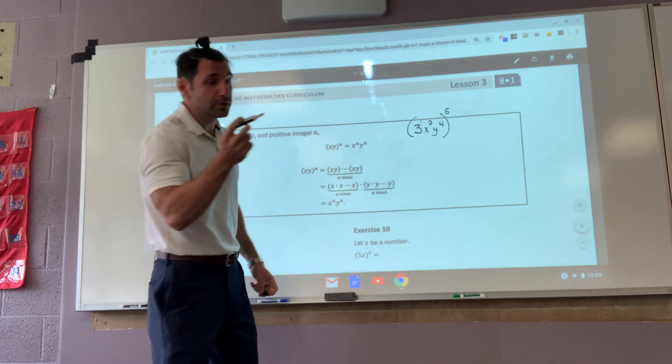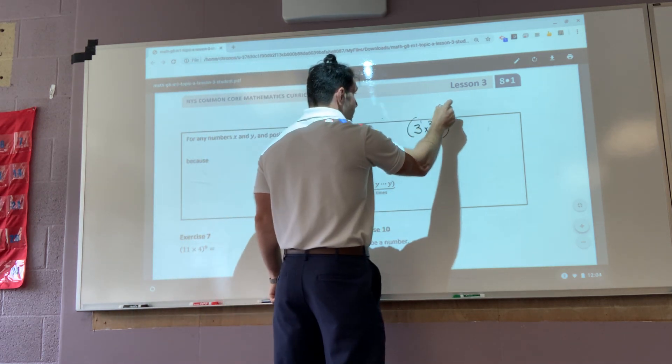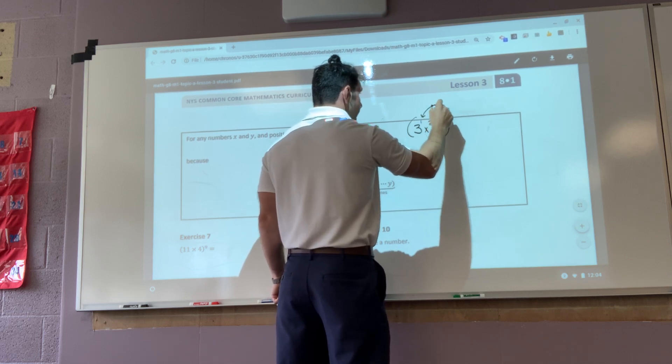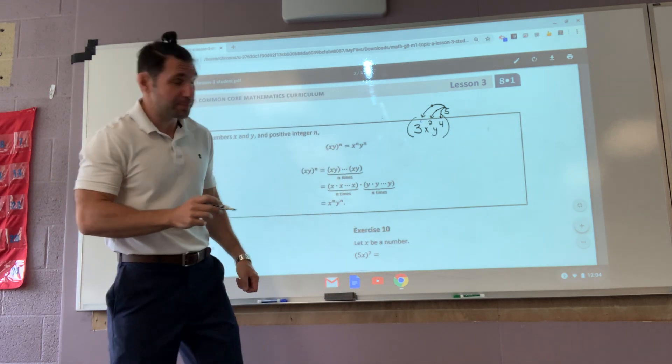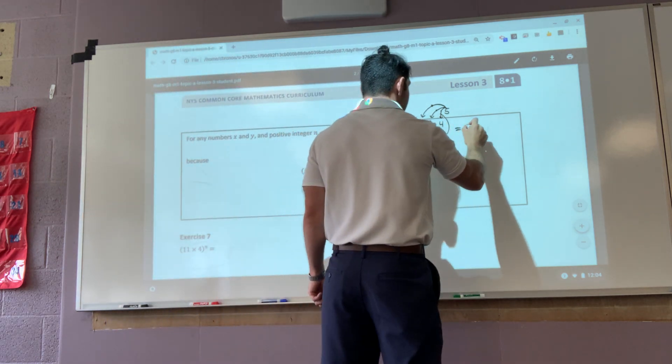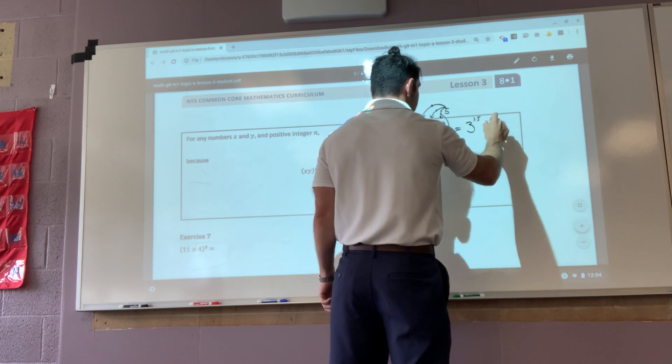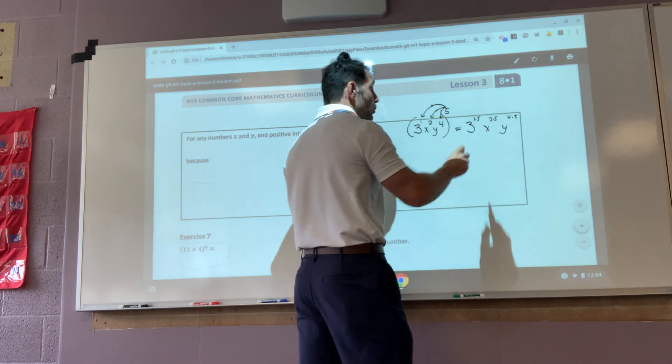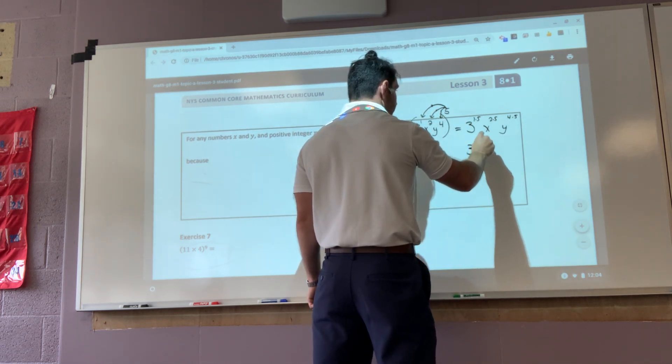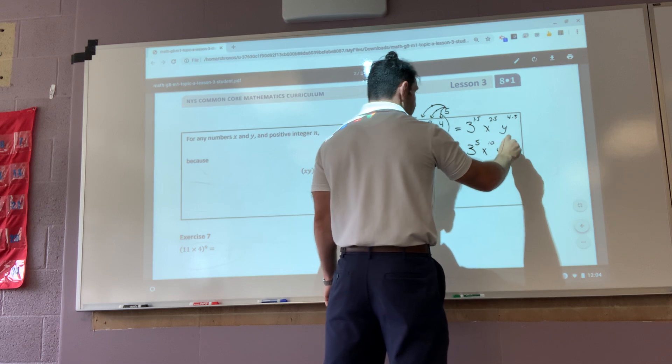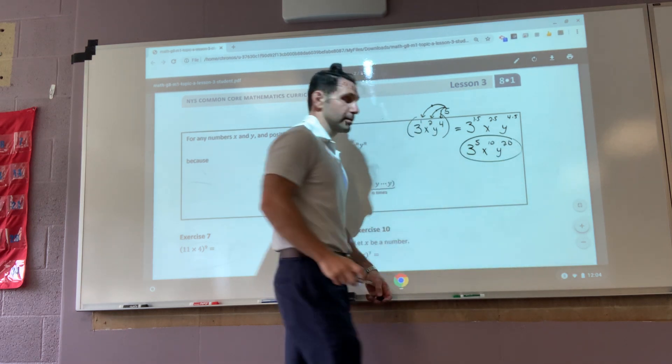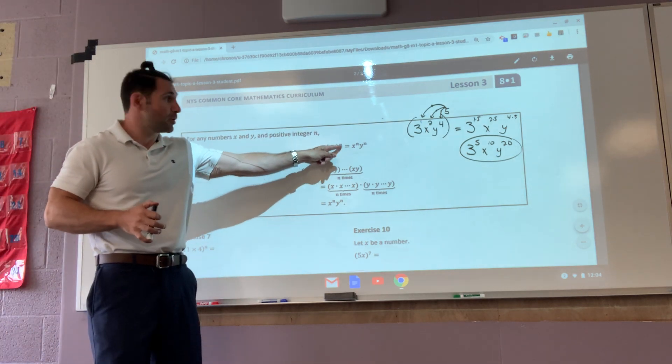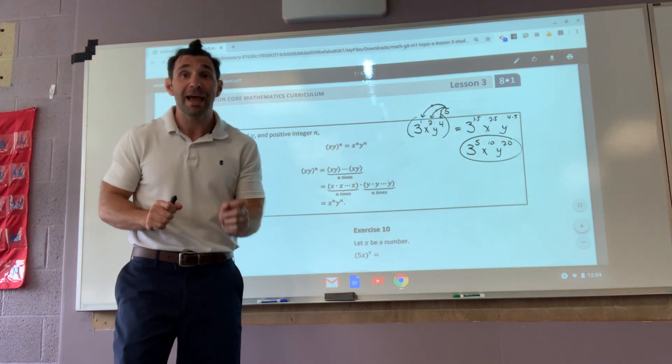So when there's more than one term, what I'm doing now is taking this exponent that it's raised to and multiplying it to every individual exponent. So that means that I have three, one times five, x, two times five, y, four times five, which leaves me with three to the fifth, x to the tenth, y to the twentieth. That's what this is saying.